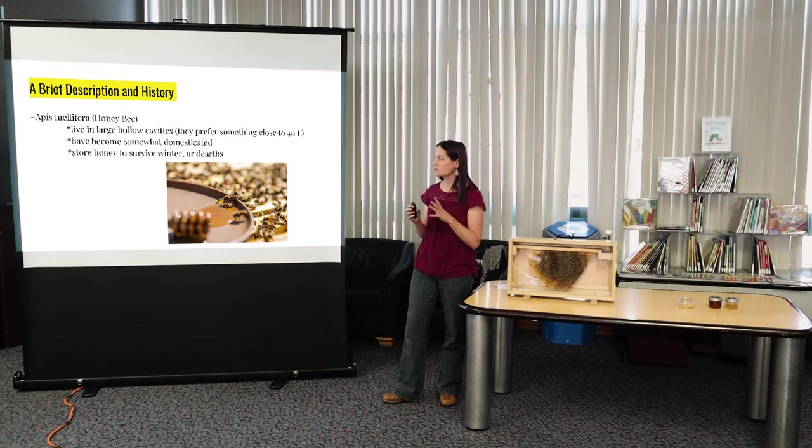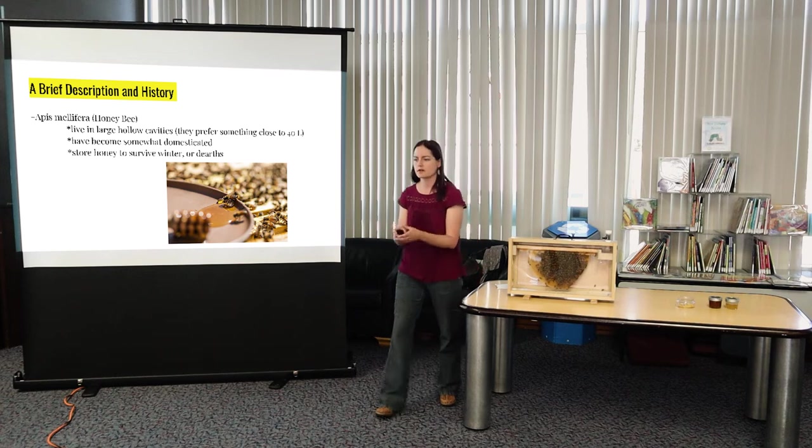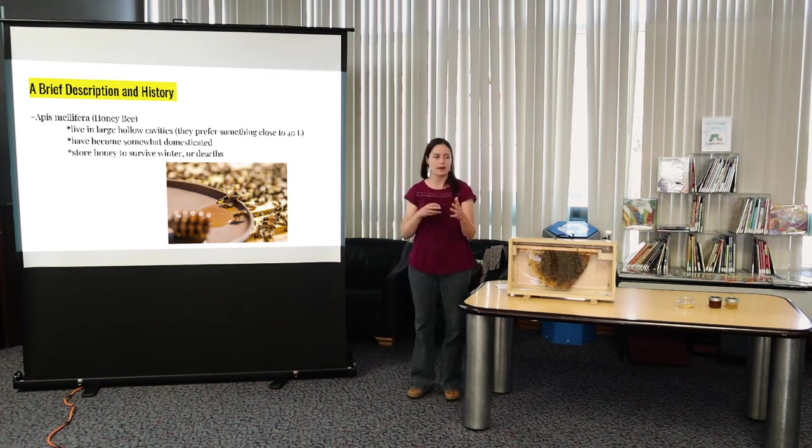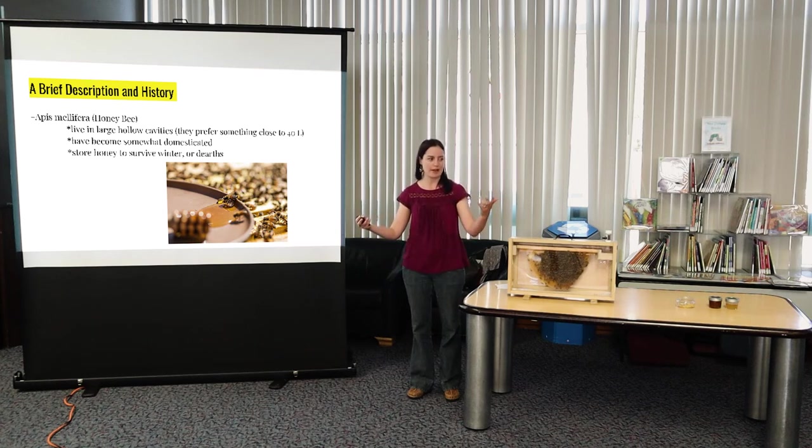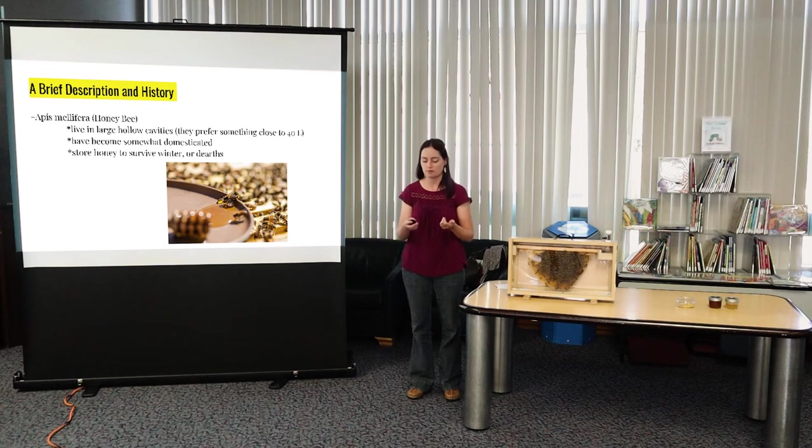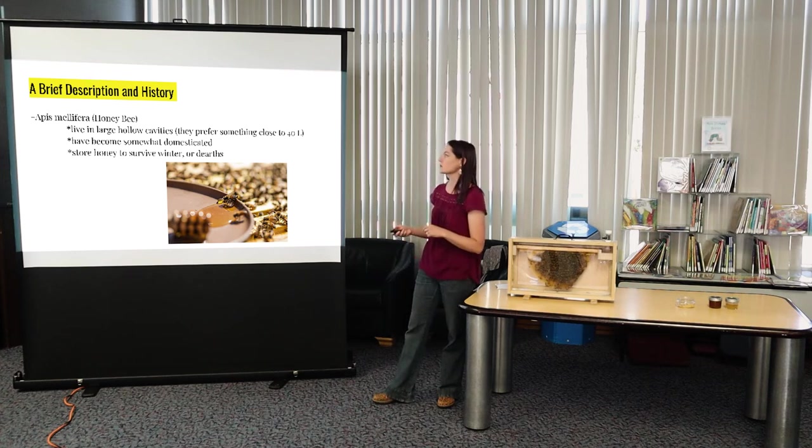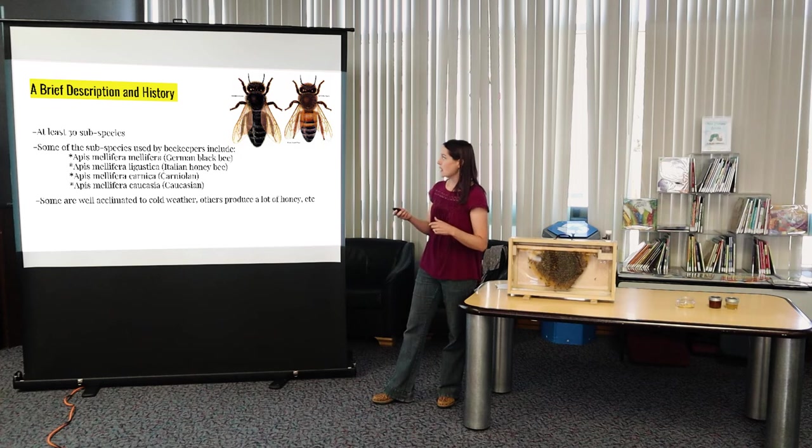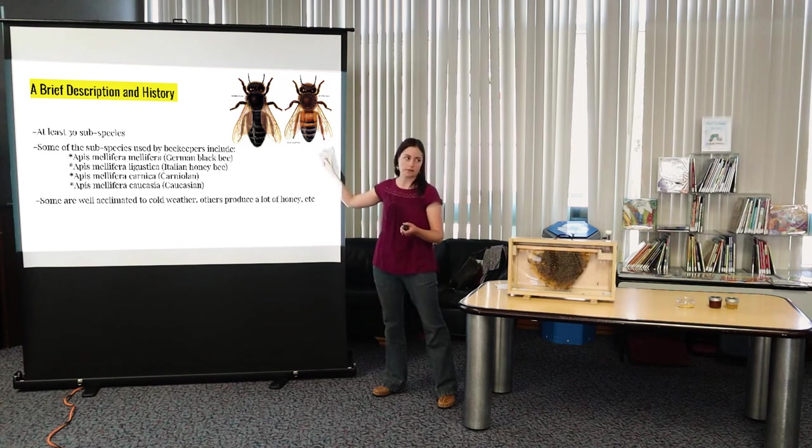But yeah, honeybees are somewhat domesticated. They usually live in hollow cavities that are about, they prefer something like 40 liters big. And yeah, it's funny because when you see bees or feral colonies trying to find a home, you know, we'll find them a lot of the time in sprinkler boxes like in the ground because they kind of meet that requirement of a hollow cavity about 40 liters big and there's a little entrance that they can fly in and out of. So it's like the perfect little bee box. So we'll do a lot of bee removals from sprinkler boxes or meter boxes or they'll get in people's walls.